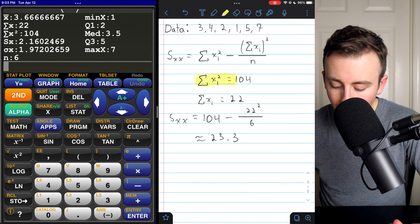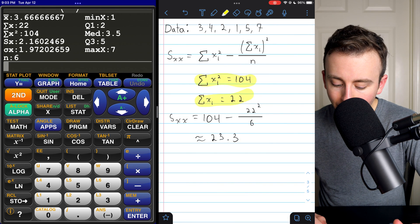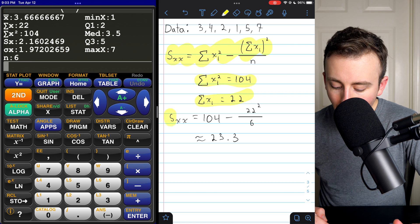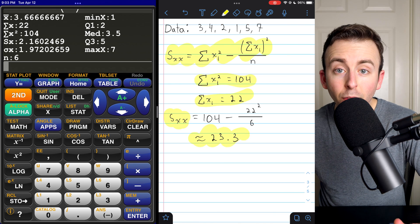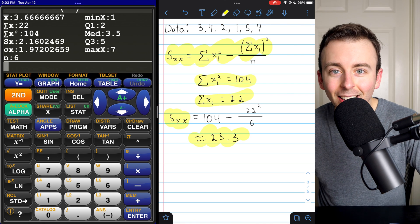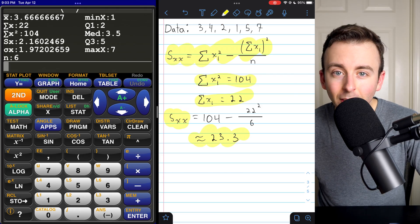And here's what I got. Using these statistics from my calculator and then the shortcut formula, I found that SXX is about 23.3. Hopefully you got the same thing. Let me know in the comments if you have any questions.